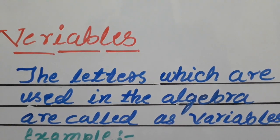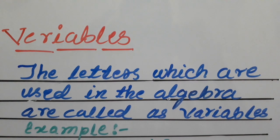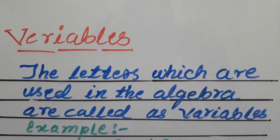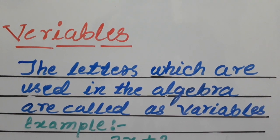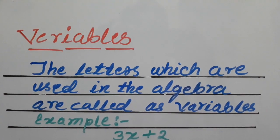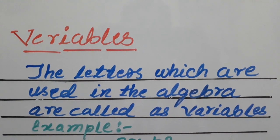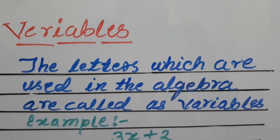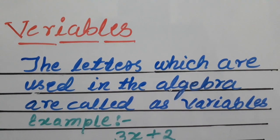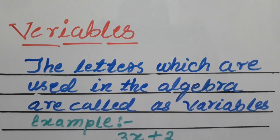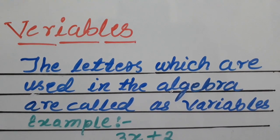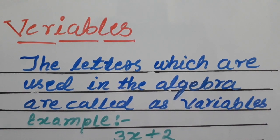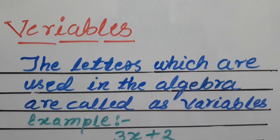Hello friends, today we are going to learn about variables in algebra. What is a variable? The letters which are used in algebra are called variables. In maths, we use letters in some formulas — for example, the area of a rectangle is length into breadth, so we denote it as L into B. L and B are letters used in algebra.